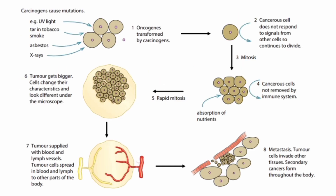The next diagram covers carcinogens, which are agents that cause mutations leading to cancer. The term for genes that cause cancer is oncogenes. Examples of carcinogens include: UV light (ultraviolet radiation from sunlight), tar from tobacco smoke, asbestos, X-rays, and gamma radiation — all of which are very dangerous to our cells and can transform oncogenes.